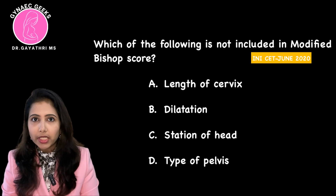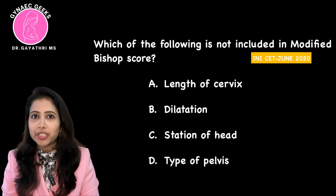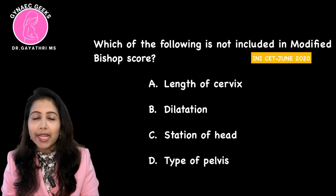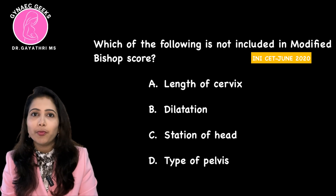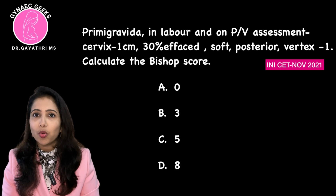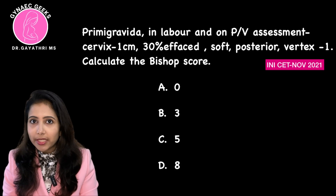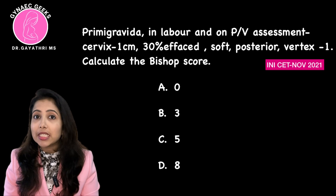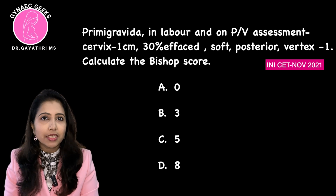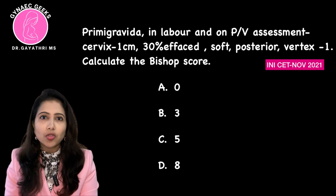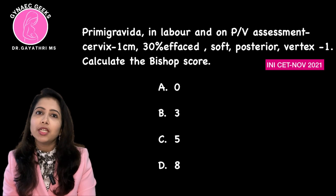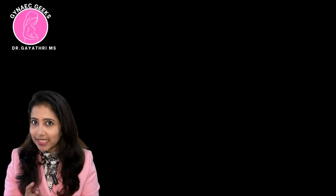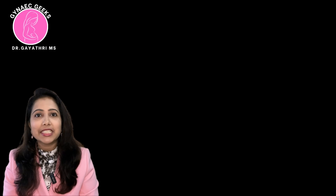Which among the following is not included in the Bishop's Score? The options were cervical length, cervical dilation, station of head, and type of pelvis. The second question was to calculate the Bishop's Score when the cervix is 1 cm dilated, 30% effaced, soft, vertex minus 1, and the position is posterior. We will discuss the answers by the end of this session.